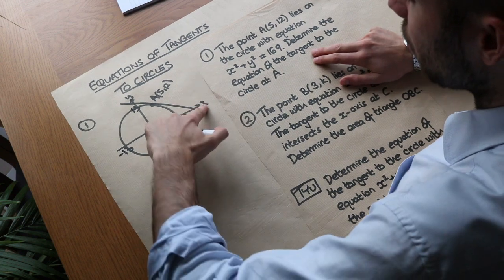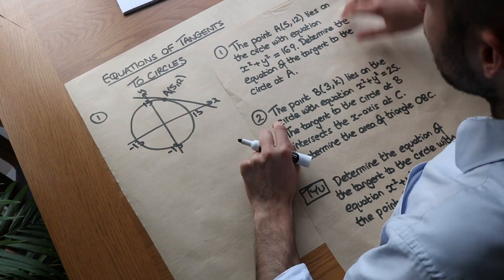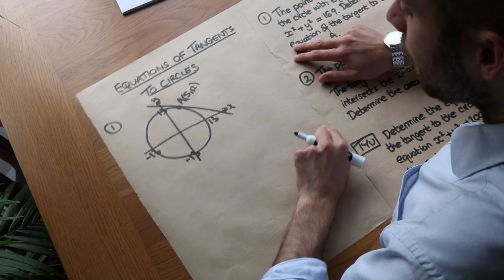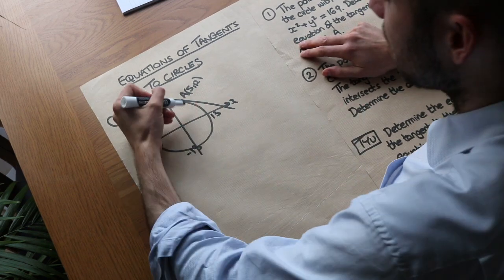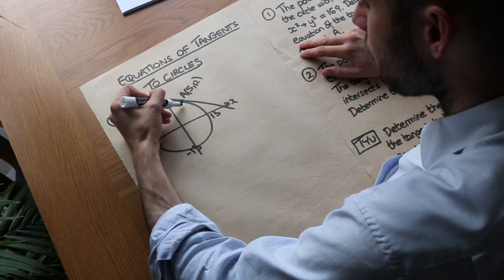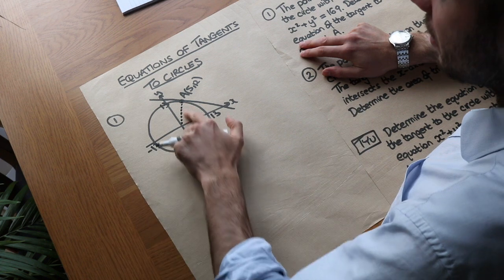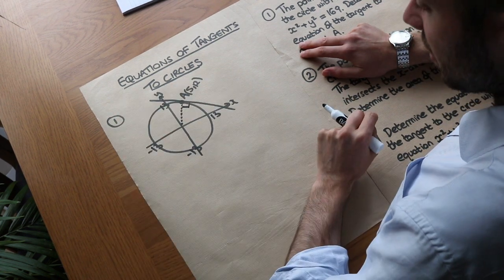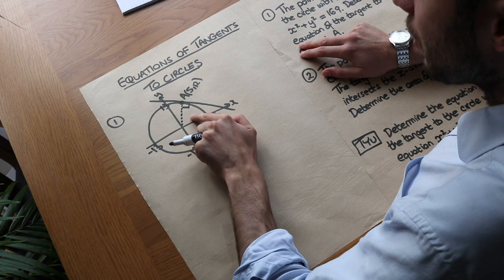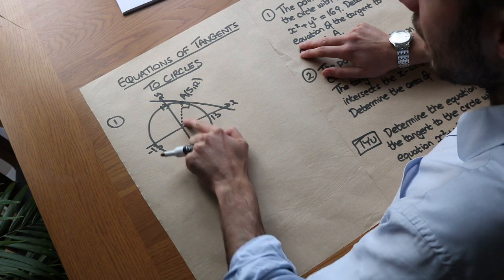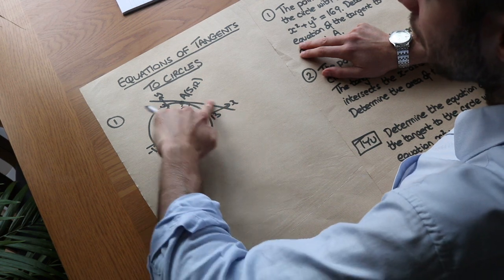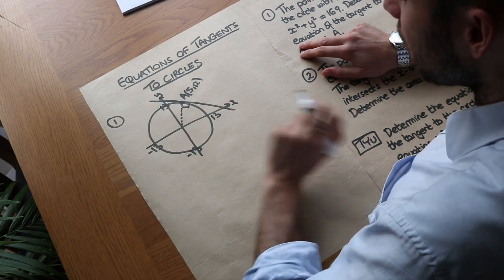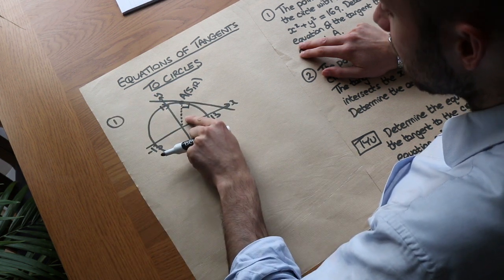We want to find the equation of the tangent line. There is a very clear set strategy for this. First, remember the circle theorem that says the radius of a circle is at right angles — perpendicular — to the tangent. If we find the gradient of the radius, we can work out the gradient of the perpendicular tangent line.